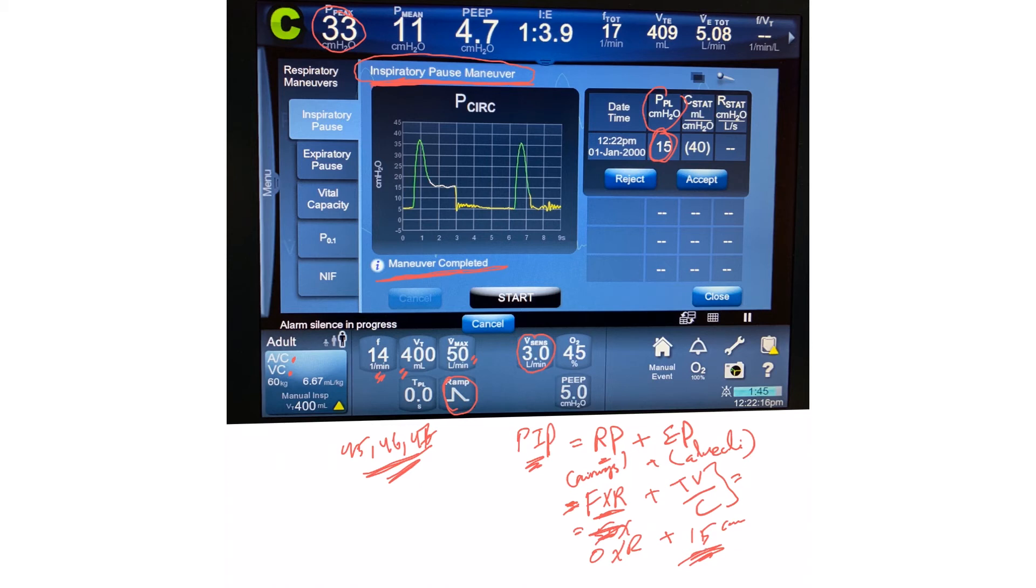Plateau pressure is also a measurement of compliance. So with a plateau of 15, the peak pressure of 33 centimeters H2O equals resistive pressure plus 15, meaning the resistive pressure is approximately 18 centimeters H2O.